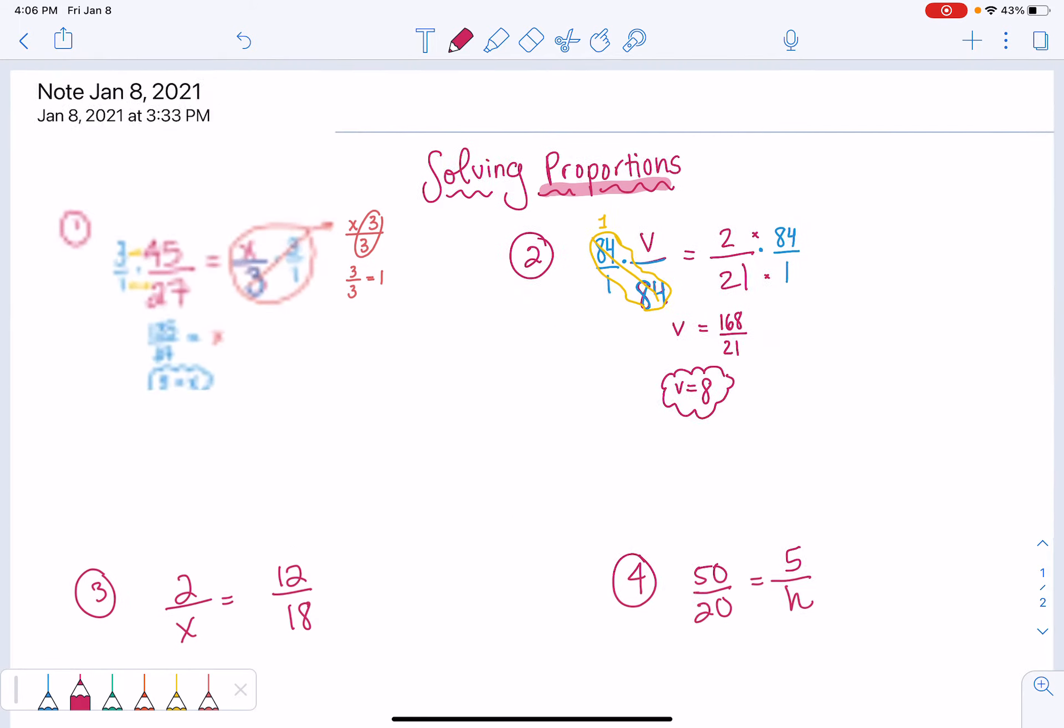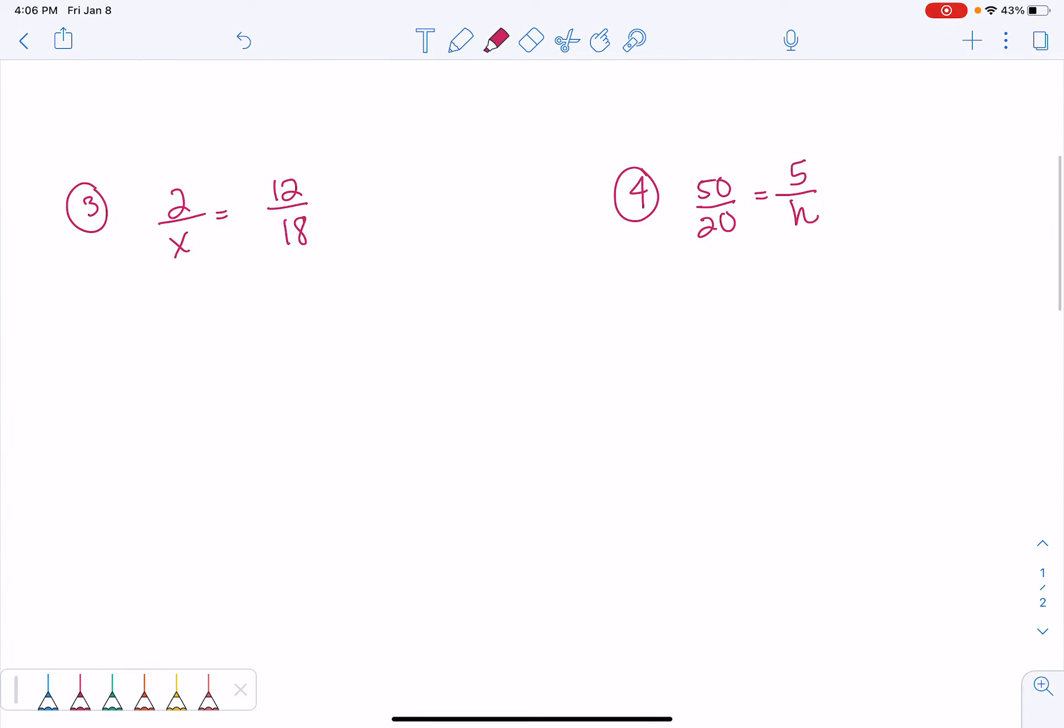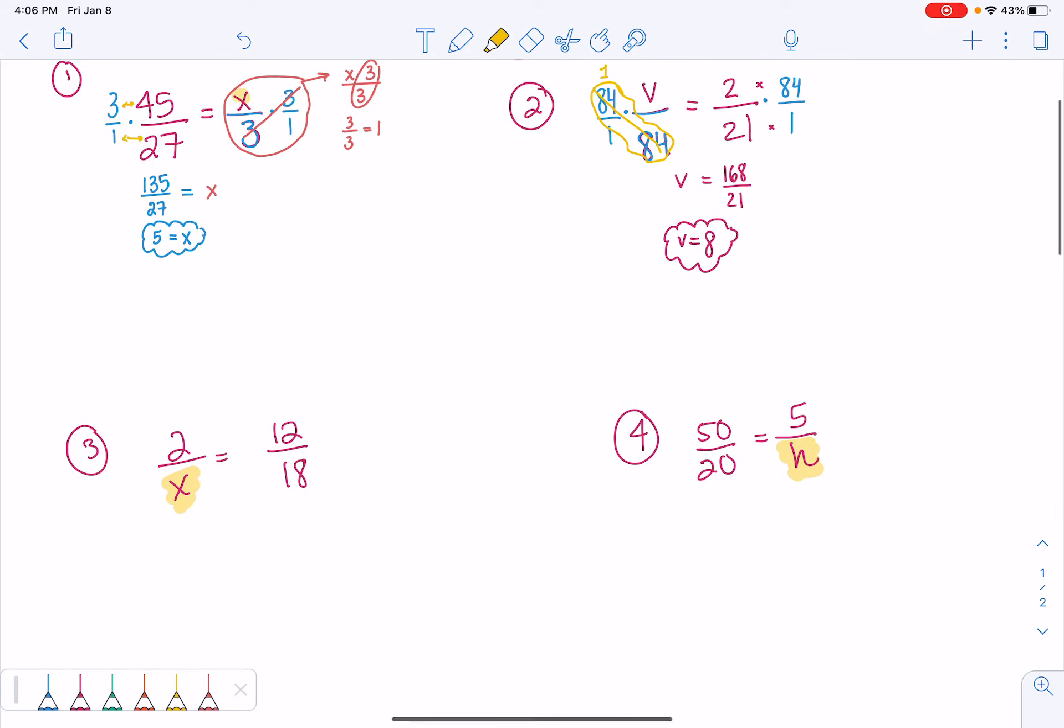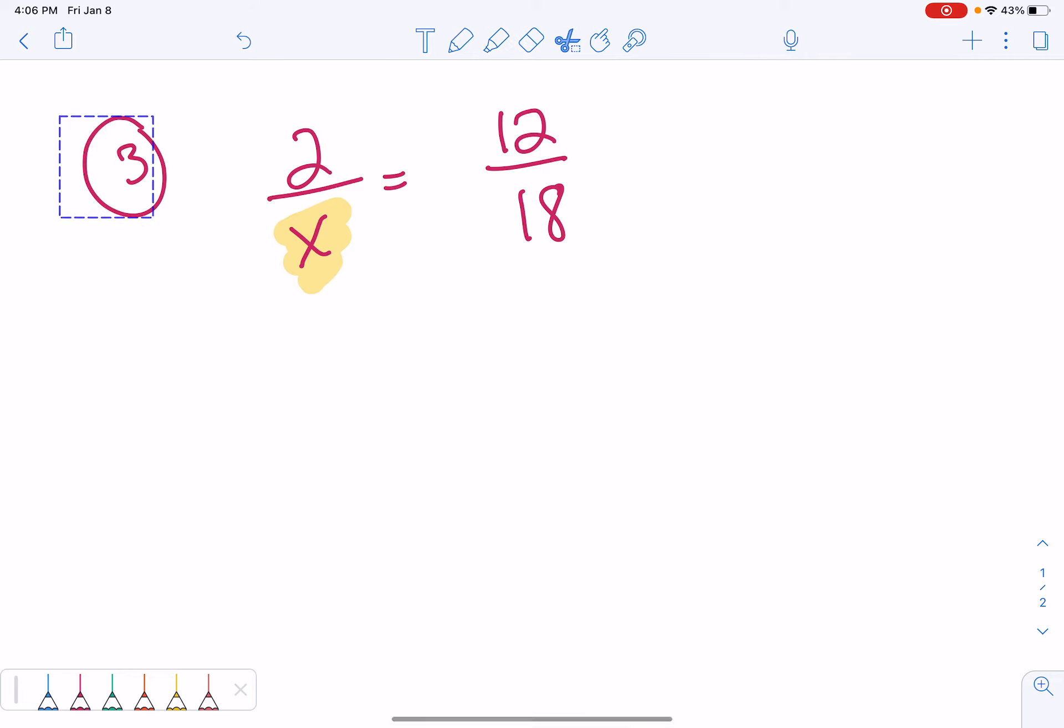Now, there's another type of proportional solving, and that is, what if our variable is in the denominator, the bottom of the fraction? In the first two examples, the variable was in the numerator, or top. So, it's a little different. Let's do an example together.